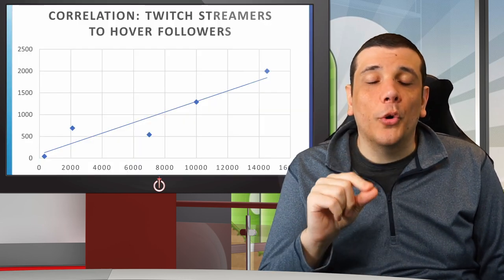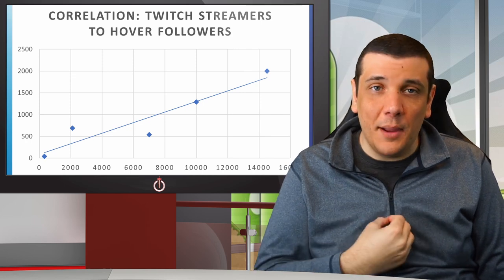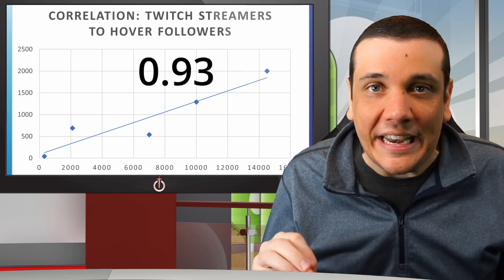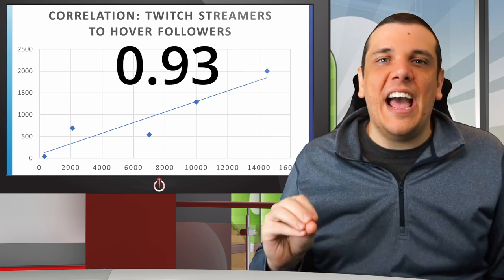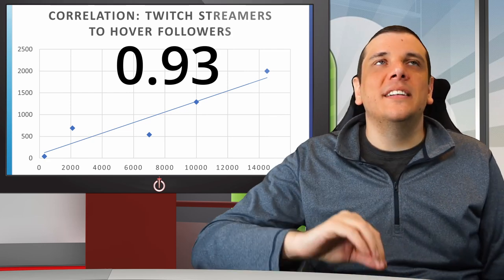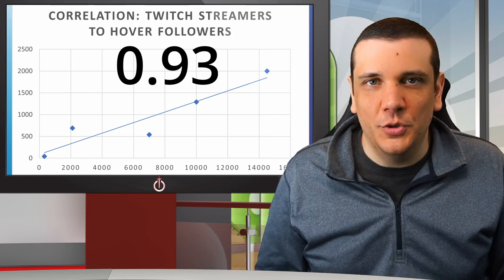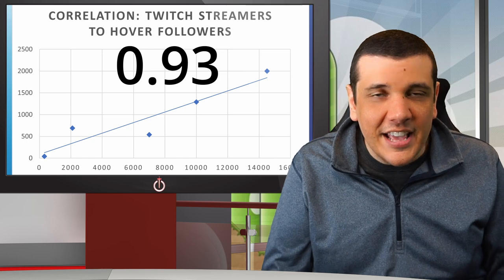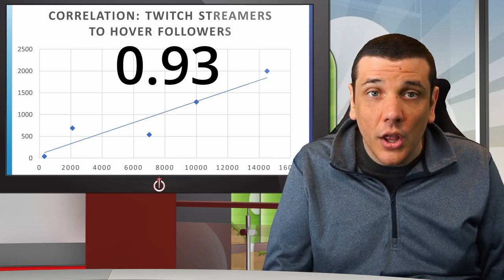The correlation coefficient on the data I pulled is 0.93. To have something over 0.9 means the magnitude in which these two sets of data are correlated is just stupidly strong. There is a severe lack of non-streamers on the Hover application, and this shows that mathematically.